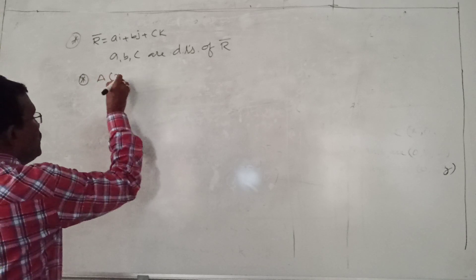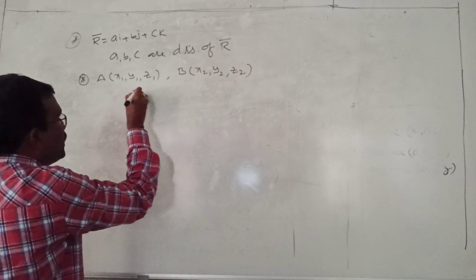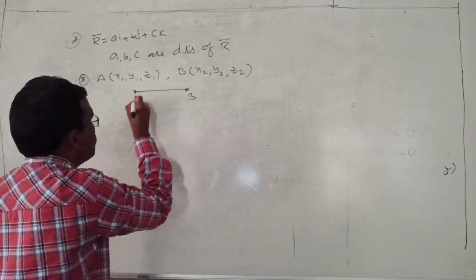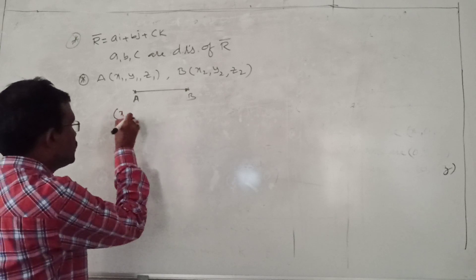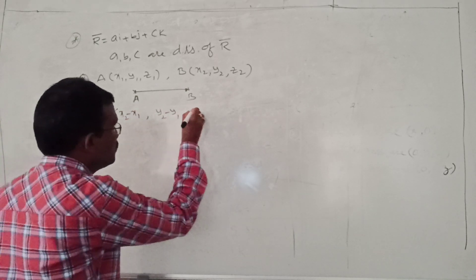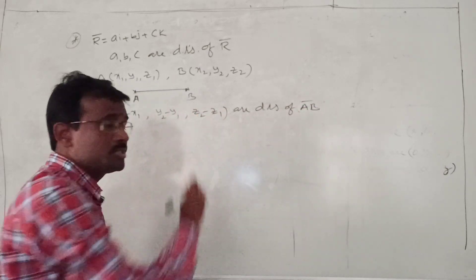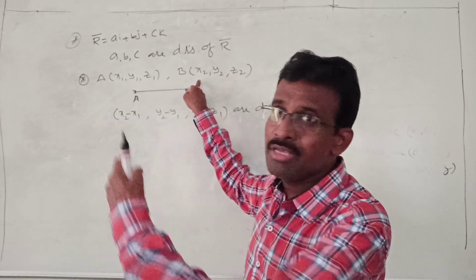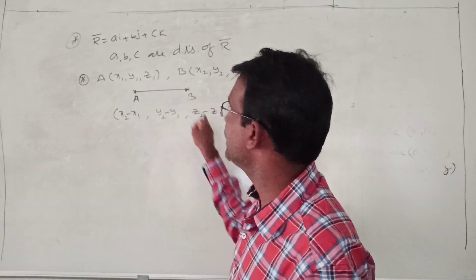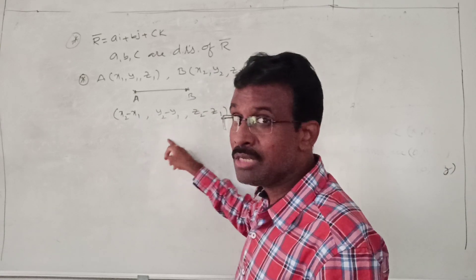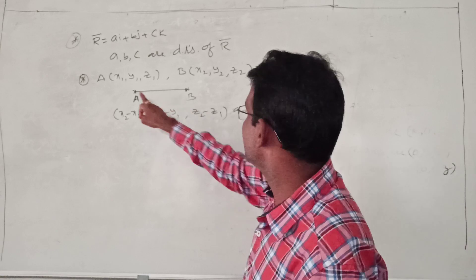Let us take two points: point A is (x1, y1, z1) and point B is (x2, y2, z2). Join these two points by a straight line. The direction ratios of line AB are x2 minus x1, y2 minus y1, z2 minus z1. This follows from the vector condition — the vector along line AB is (x2−x1)i + (y2−y1)j + (z2−z1)k, so its direction ratios are x2−x1, y2−y1, z2−z1.